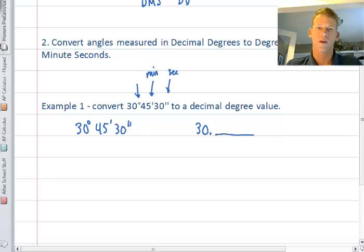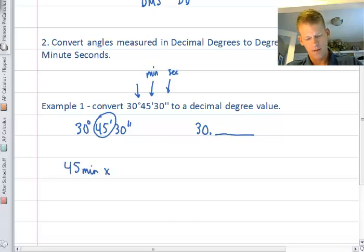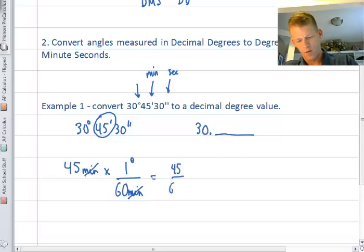We're going to get the decimal portion from two basic areas, starting with the minute portion. 45 minutes - if you think in terms of a clock, there's 60 minutes in an hour and 60 minutes in one degree. So we multiply, one degree has 60 minutes, and as a result our units cancel and we have 45 over 60 degrees. This equals 0.75 degrees.